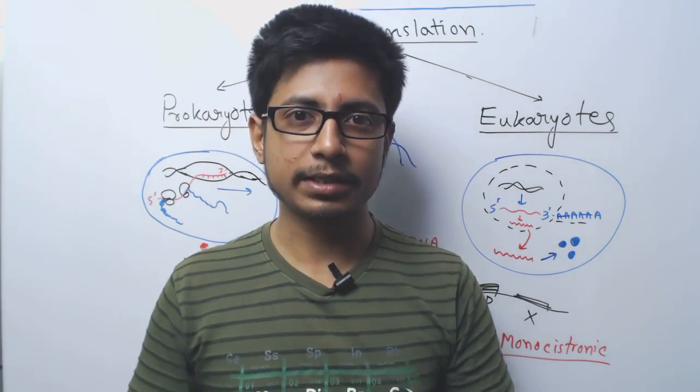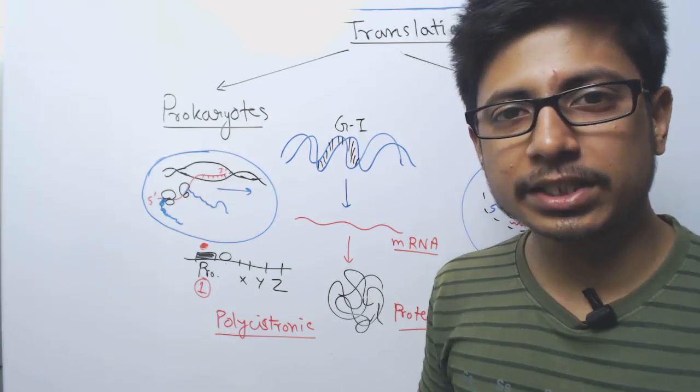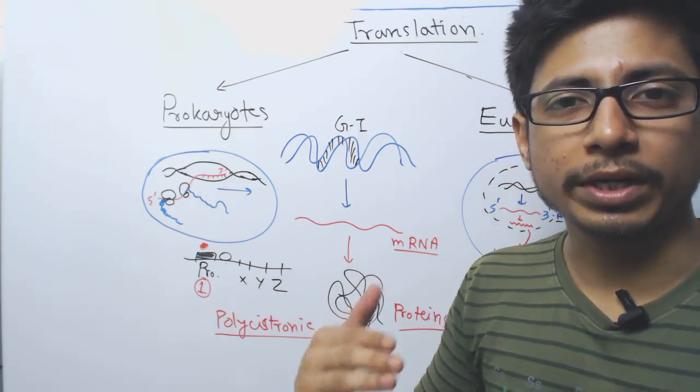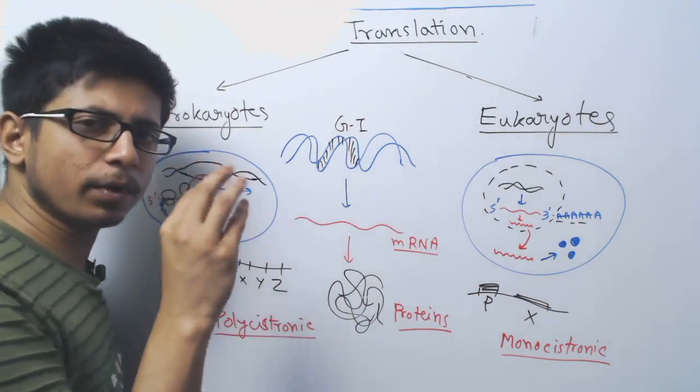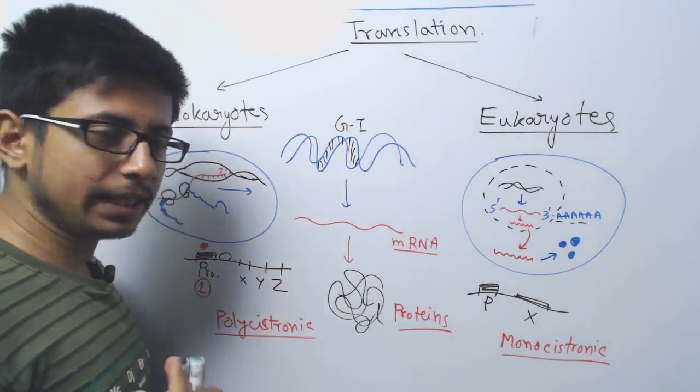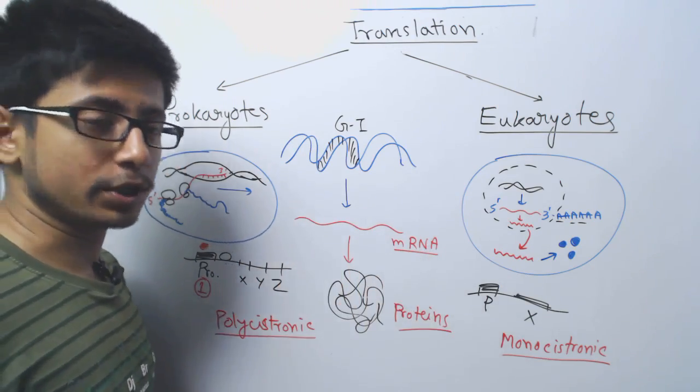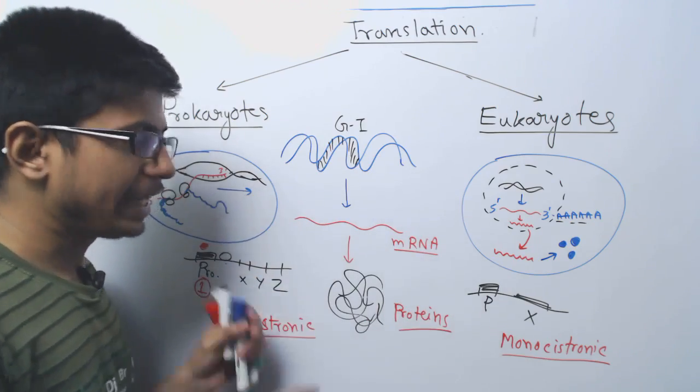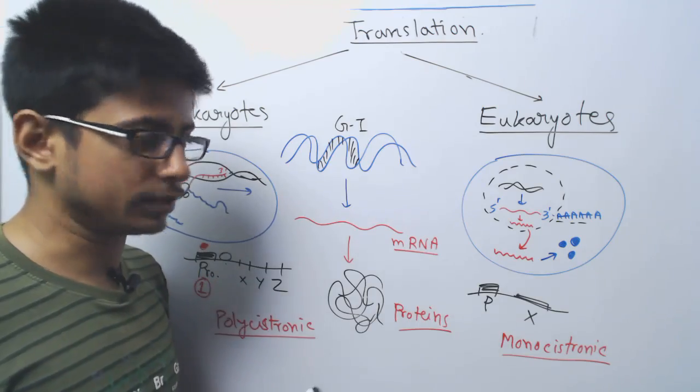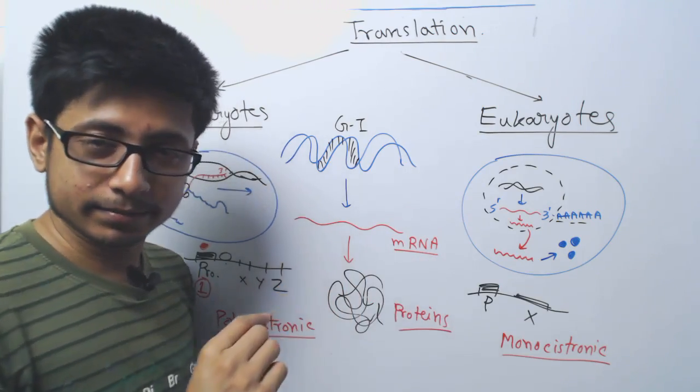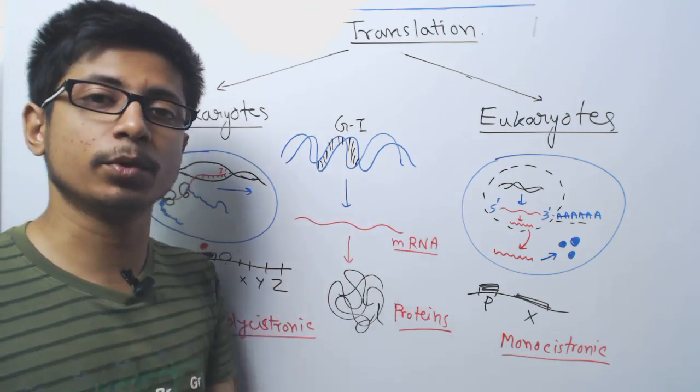Before that you must know what is translation. Translation is when the mRNA is coded into proteins. DNA contains all our information and is converted into mRNA by the process called transcription. After transcription, mRNA contains all the information that DNA possesses. mRNA is messenger RNA because it carries all the information for protein coding.